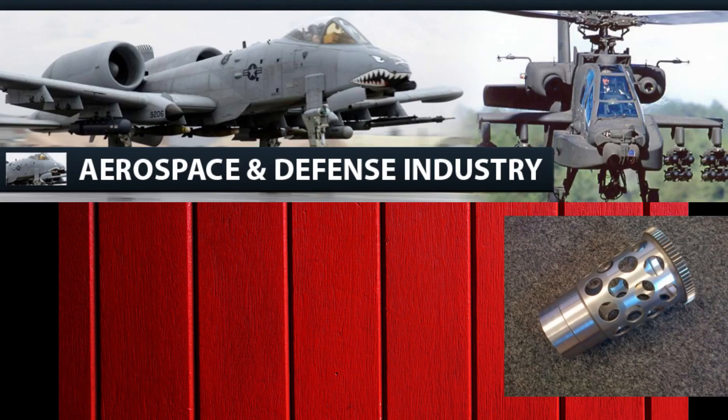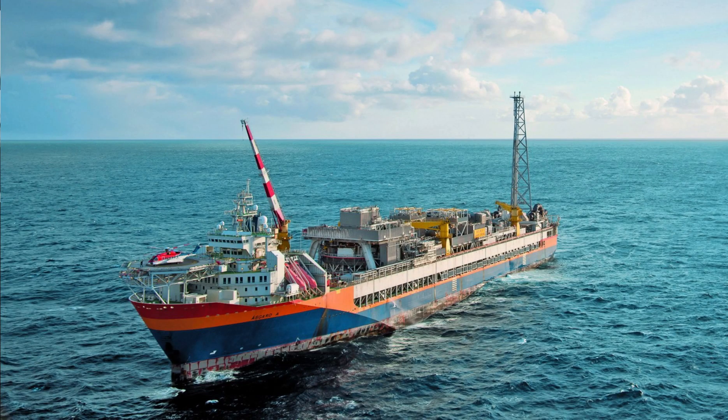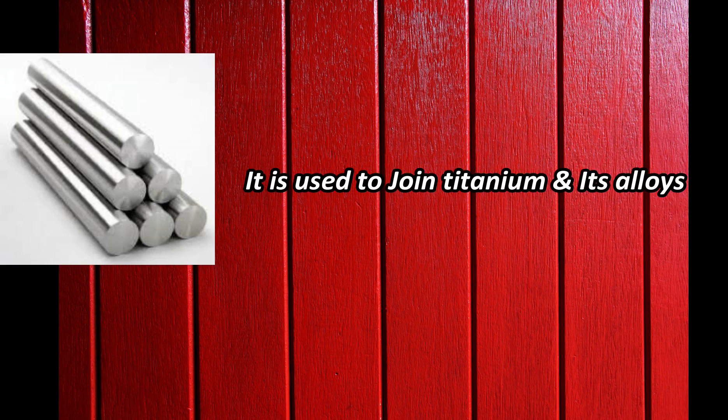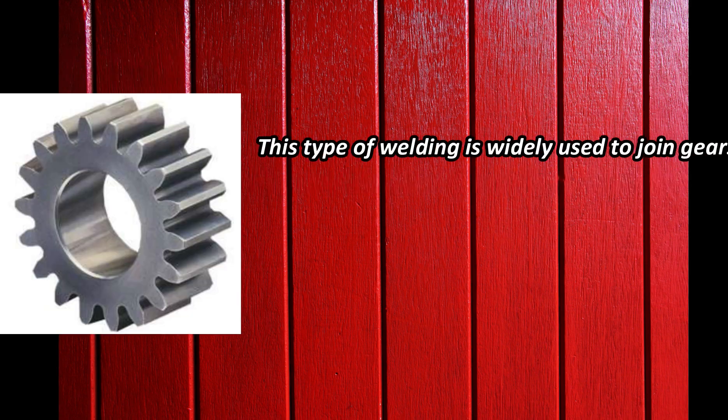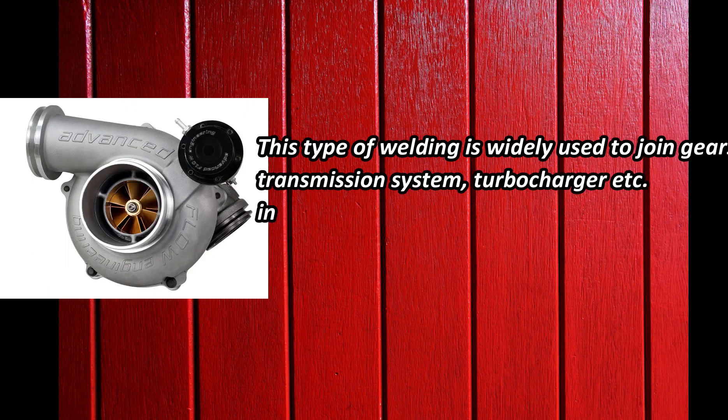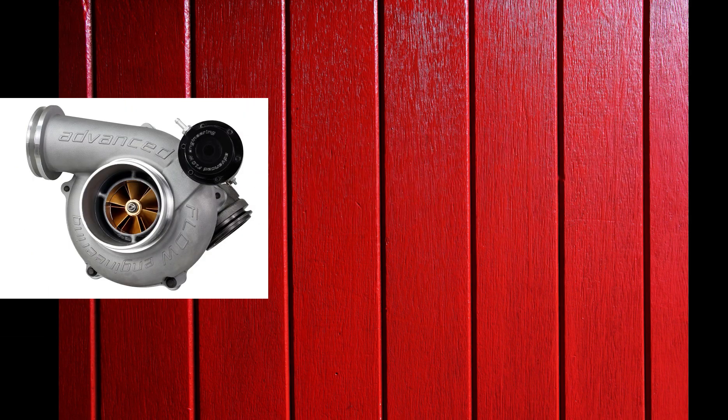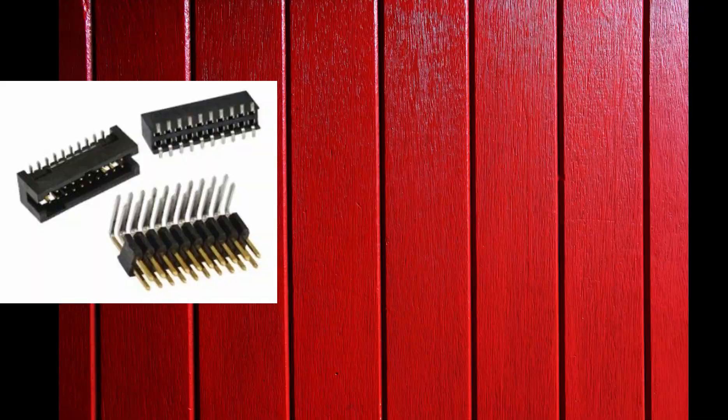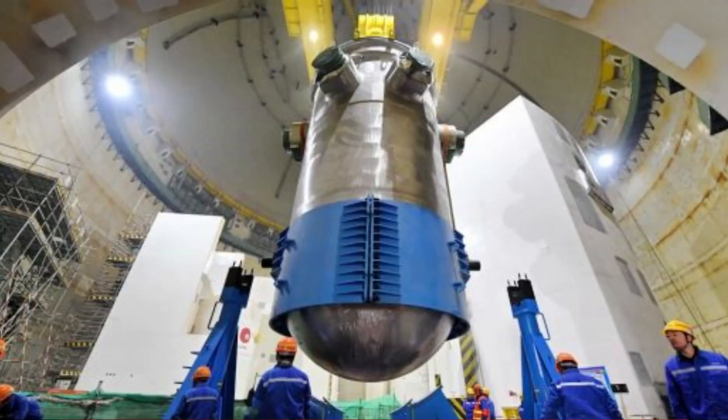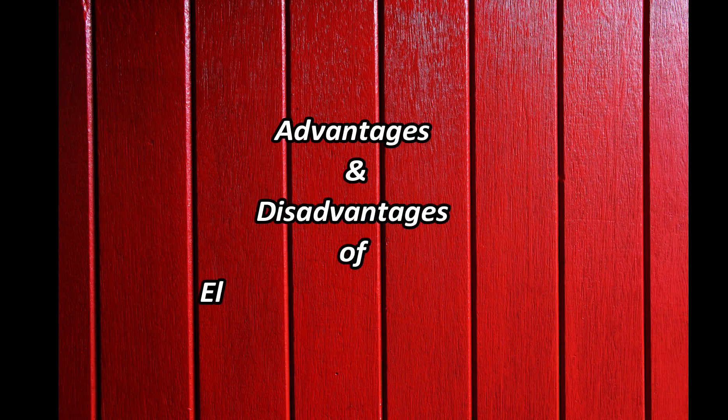It is used in aerospace industries and marine industries for structure work. It is used to join titanium and its alloys. This type of welding is widely used to join gears, transmission systems, turbochargers, etc. in automobile industries. It is used to weld electronic connectors in electronic industries. This process is also used in nuclear reactors and in medical industries.